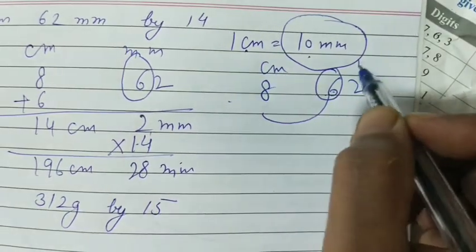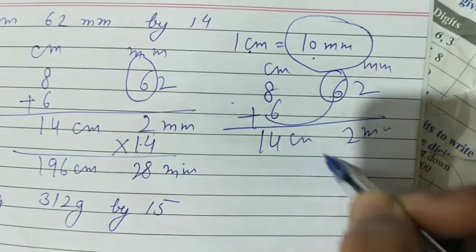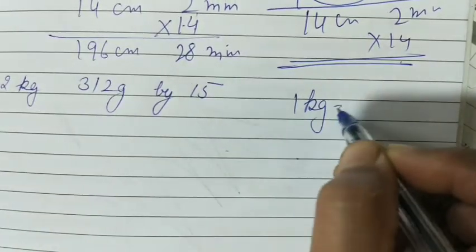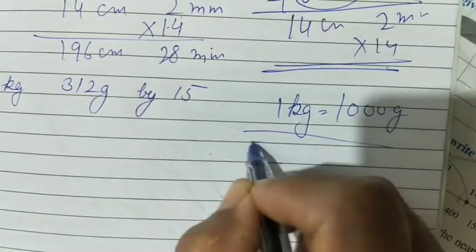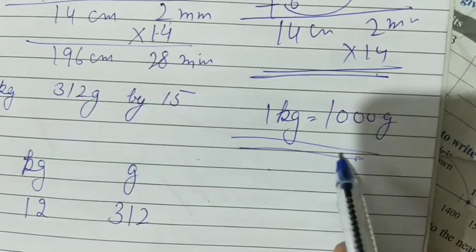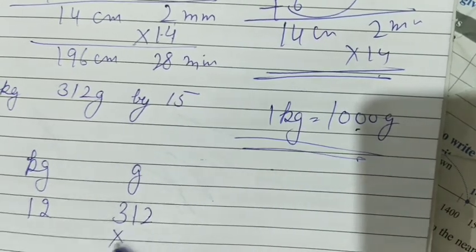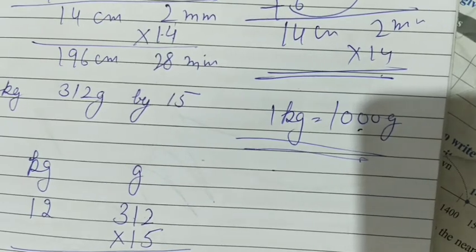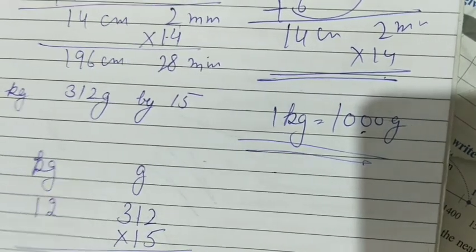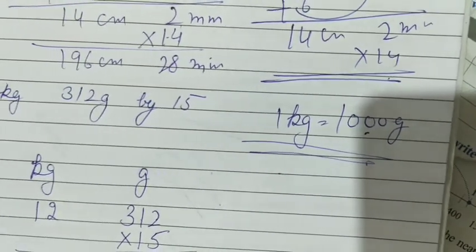In 1 kilogram, how many grams? Thousand grams. Kilogram, gram 12, 312. Gram should have 3 digits compulsory. So here already 3 digits are there, right? So multiply by 15. It's very simple. You can first do by 5. Then by 1. 2, 1, 3. Answer is 0, 8, 6, 4, 8, 1. Kilogram, gram.